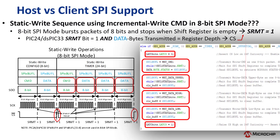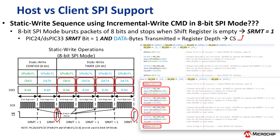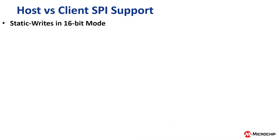As shown, since all MCP-3X6X commands and data values can be divided into an integer number of 8-bit data bytes, transmission in 8-bit SPI mode is fairly simple. Now let's take a look at static write operations in 16-bit SPI mode and how the number of packets transmitted can be reduced to thereby increase throughput.